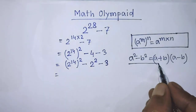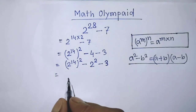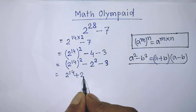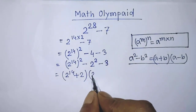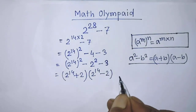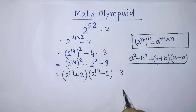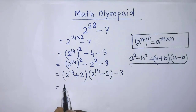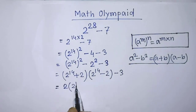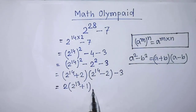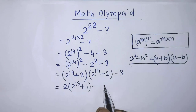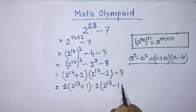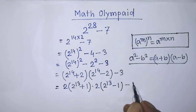So guys, according to this formula, we can write from the first two terms of this algebraic expression: 2 to the power 14 plus 2, times 2 to the power 14 minus 2, minus 3. In this algebraic expression the common factor is 2, so it will be 2 times 2 to the power 13 plus 1, times 2 times 2 to the power 13 minus 1, minus 3.